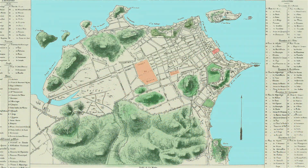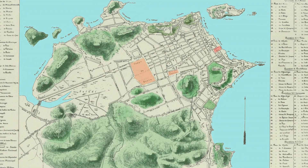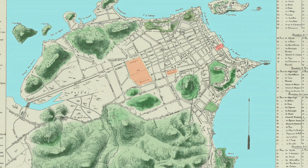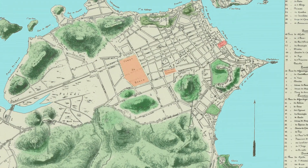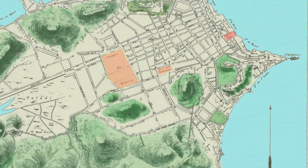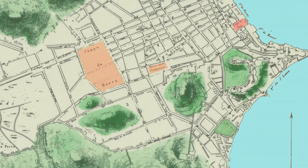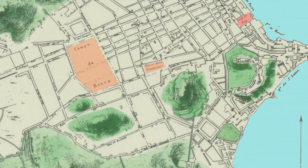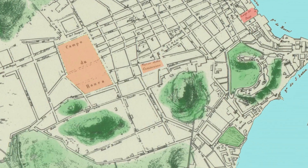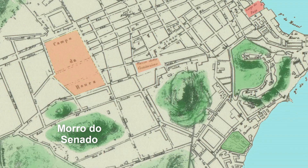We will see some ancient maps of Rio de Janeiro where the Morro do Senado appeared, and even the other morros, so we can see that the geography was quite different from the city.